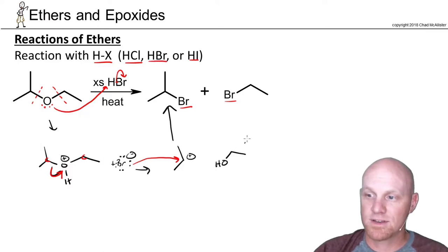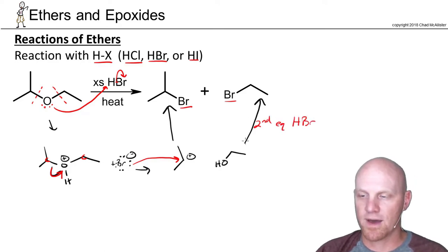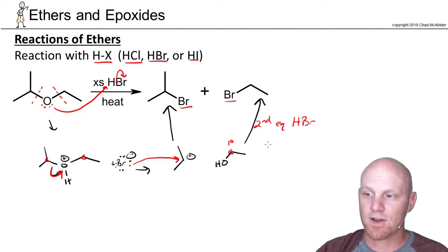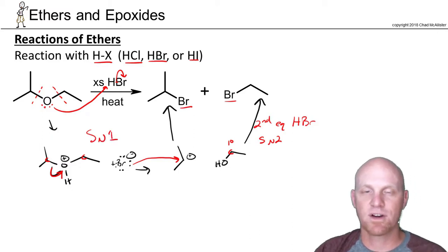And then this product right here will just form if we react it with the second equivalent of HBr. And I won't go through to show the mechanism. But in this case, because this carbon here is a primary carbon, this would actually end up going SN2 whereas over here all of this happened SN1. So very similar to what we saw with alcohols.